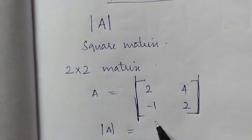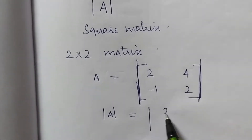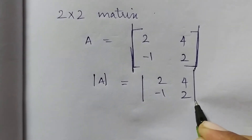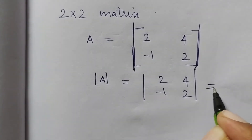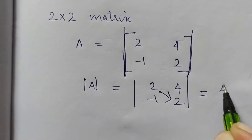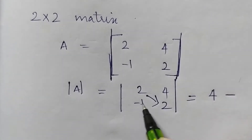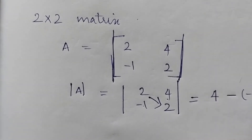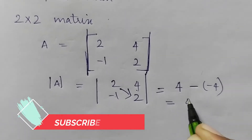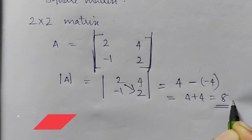The determinant has elements 2, 4, minus 1, 2. We use cross-multiplication: 2 into 2 equals 4, minus (minus 1 into 4) equals minus 4 becomes plus 4. So 4 plus 4 equals 8. That is the determinant value.